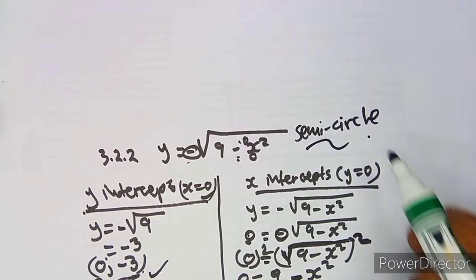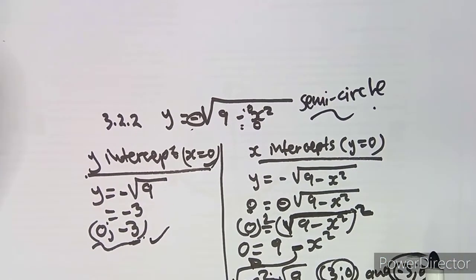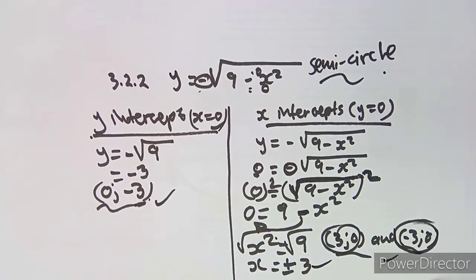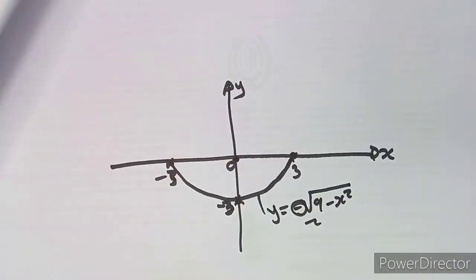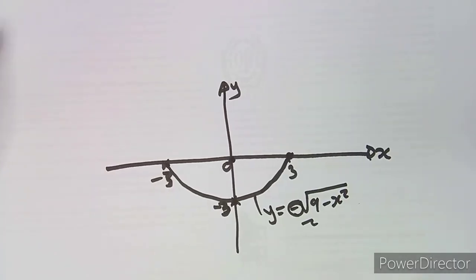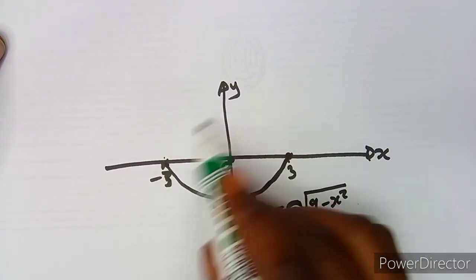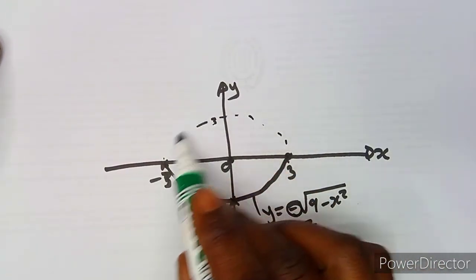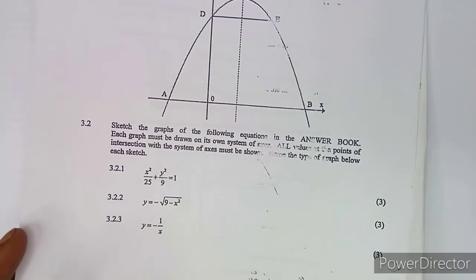A semi-circle is simply a half circle. That is the type of graph we are given here. If it were a full circle, we would have a complete curve from (3, 0) going all the way around.